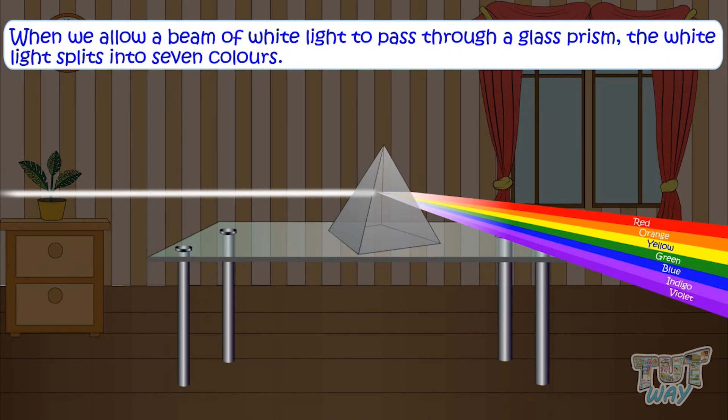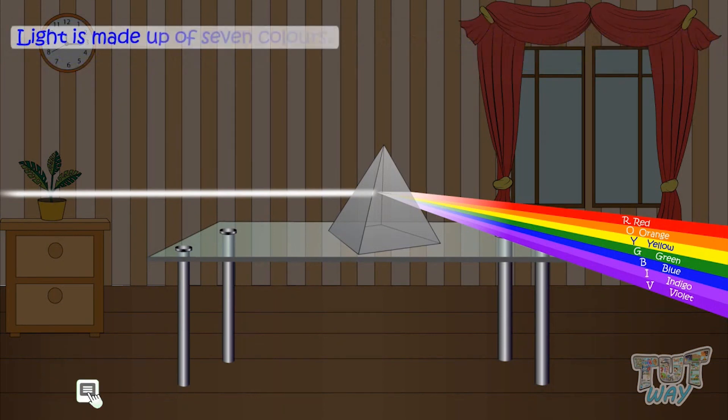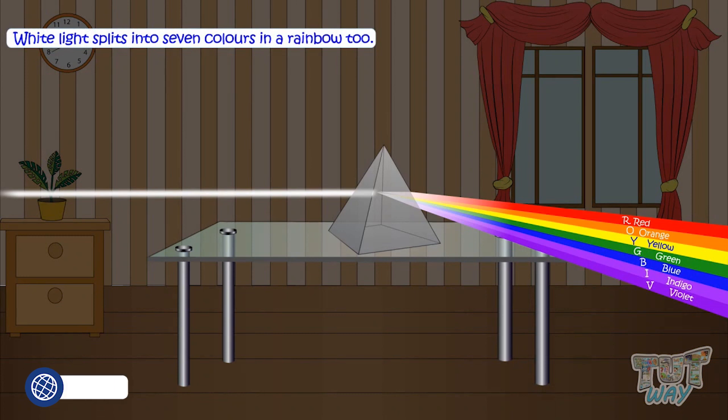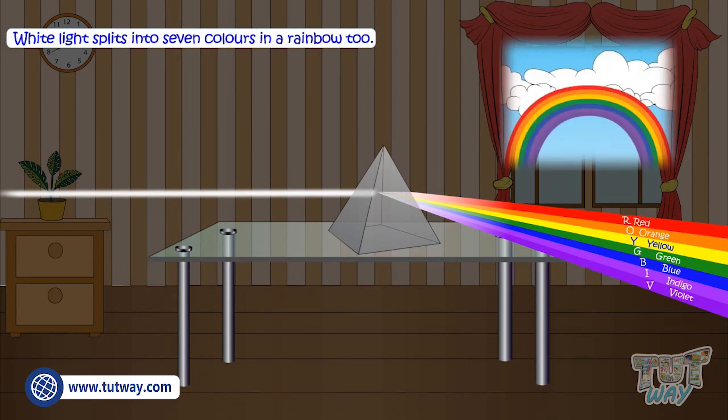The seven colors are violet, indigo, blue, green, yellow, orange, red. In short, you can say VIBGYOR. These are the seven colors that light is made up of. You often see white light splitting into seven colors in a rainbow too.